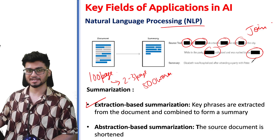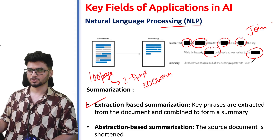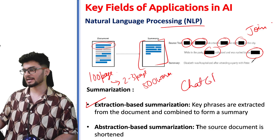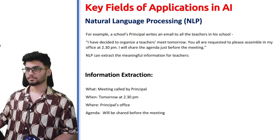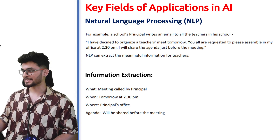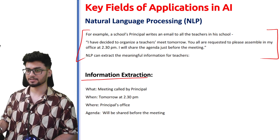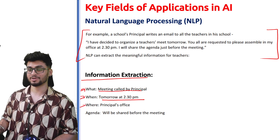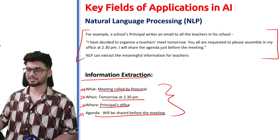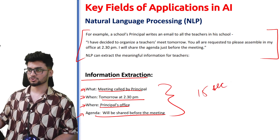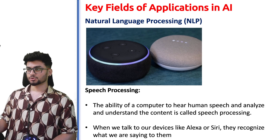This is known as extraction-based summarization. Or you can remove redundant parts and further condense the important parts into one single summary. If you use ChatGPT, it has a feature where it summarizes all your documents. Another application of NLP is information extraction — if you feed an entire text to an NLP system, it can extract important information like what the text is about, when and where something is happening, and the agenda. Reading it yourself might take 30 seconds to a minute, but using NLP you get the key information in about 15 seconds. This is very useful when you have very large documents.